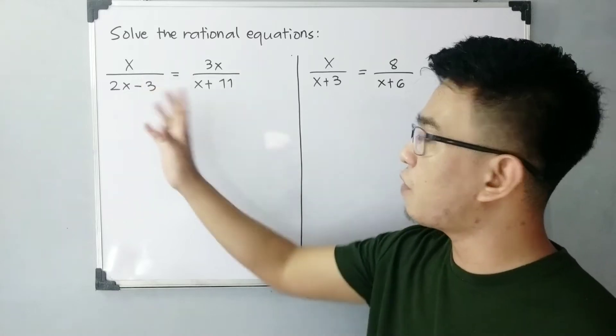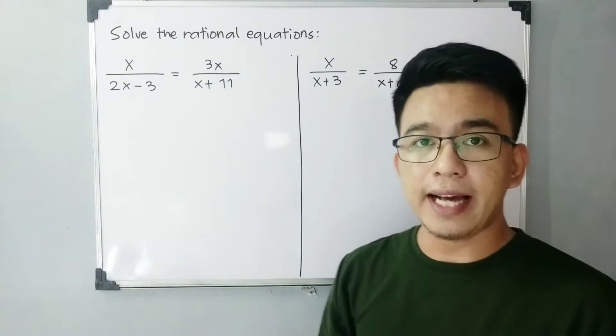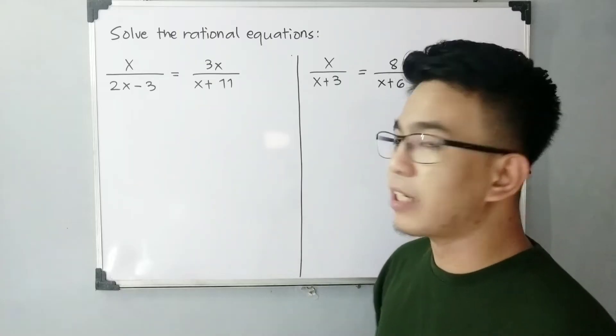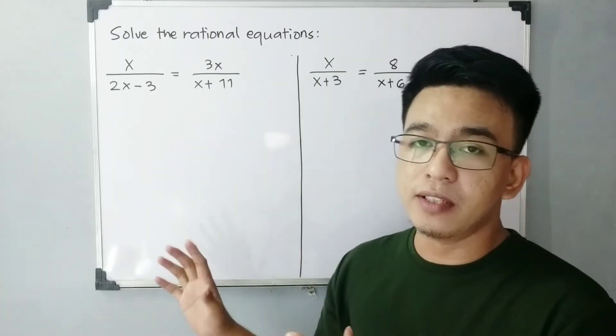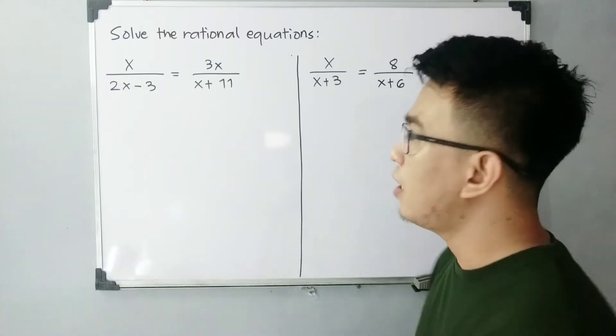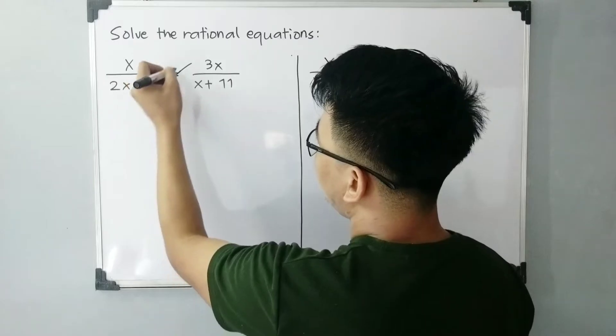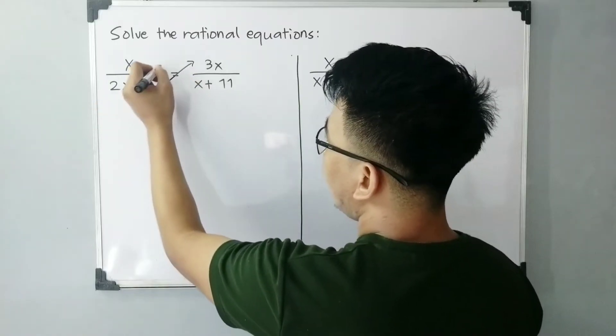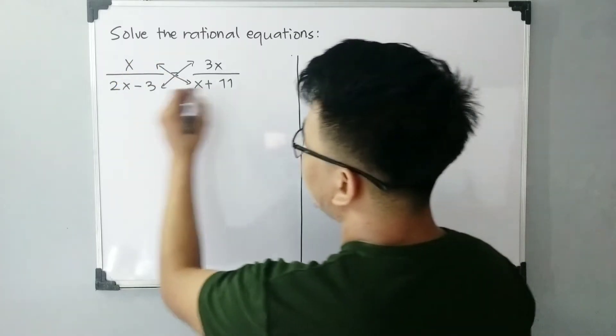We have x over 2x minus 3 is equal to 3x over x plus 11. So what we're trying to do here is to transform first this equation into quadratic equation. So the method that I will be using is cross-multiplication. I will cross-multiply this expression to this expression and this expression to this expression.